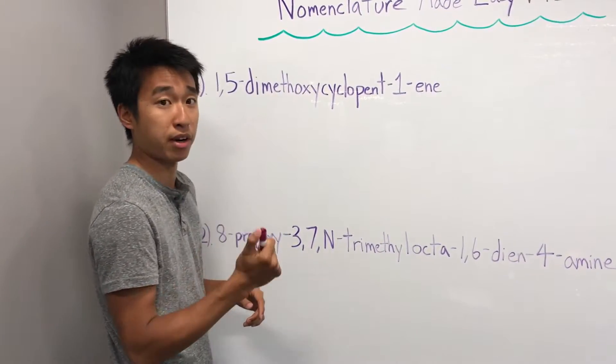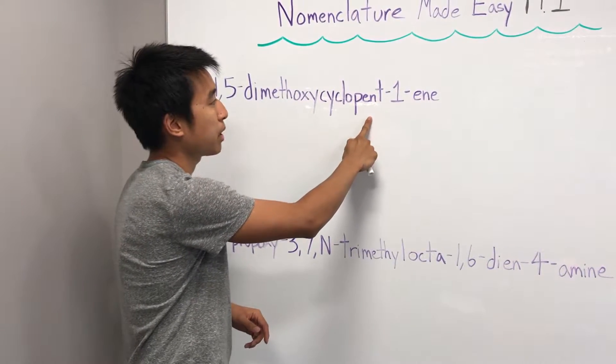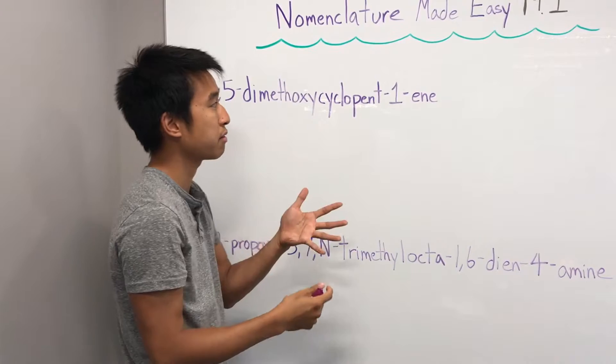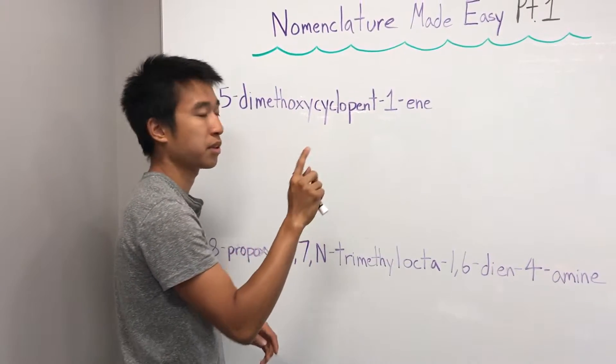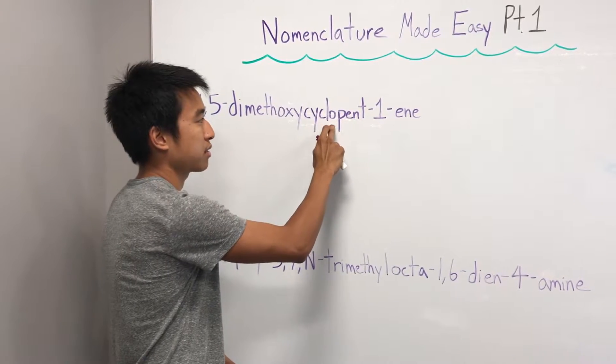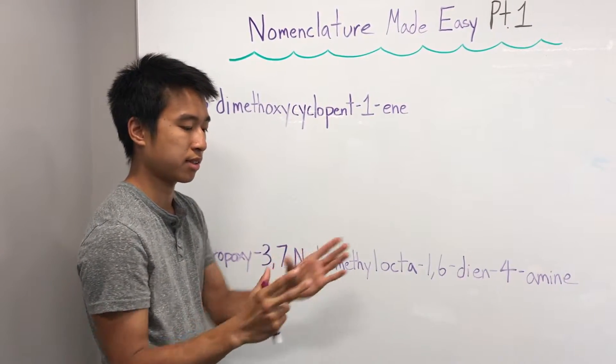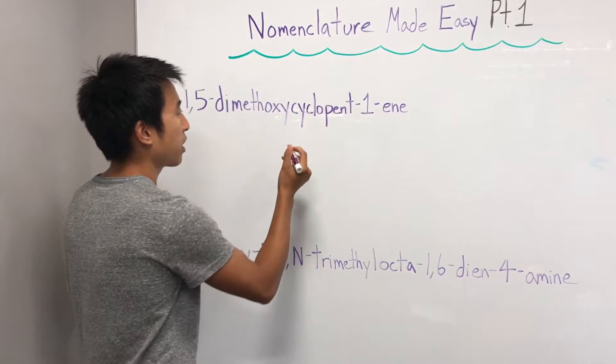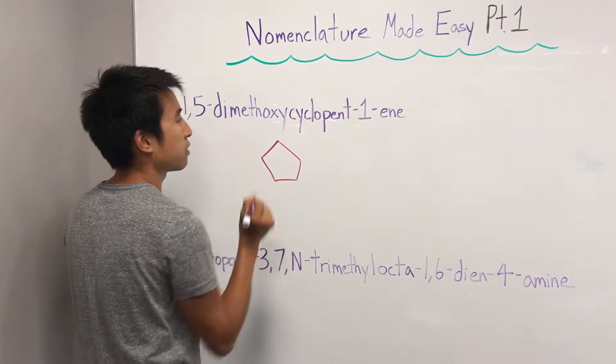So just hold that thought for a second, and we'll come back to it. Next, I need to find my parent chain. So that is this guy right here, pent. Pent, like pentagon, so five. And then, is it going to be a five-membered chain? Well, not quite, because of this guy right here, cyclo. Cyclo means that your chain is cyclic, or a ring, basically. So we're going to have a pentagon, or cyclopentane, over here.